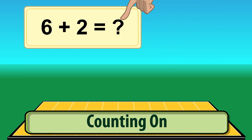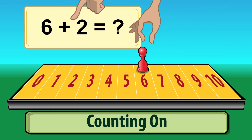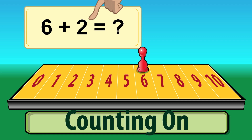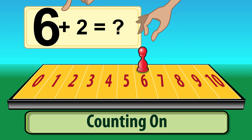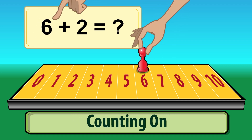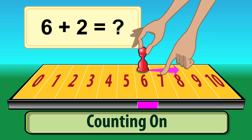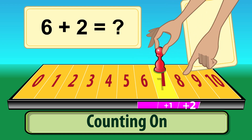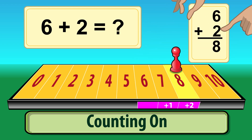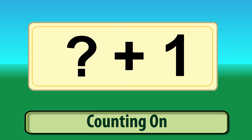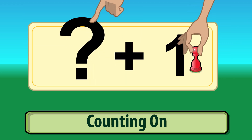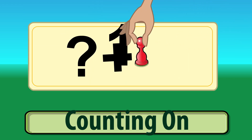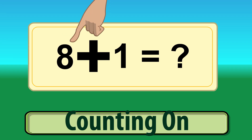Let's do it on the number line. 6 plus 2. Counting on: start with the larger number, 6. Move 2 places to the right. 6, 7, 8. 6 plus 2 equals 8. Any number plus 1 is the next number to the right.